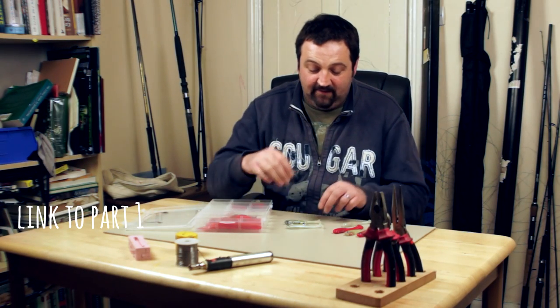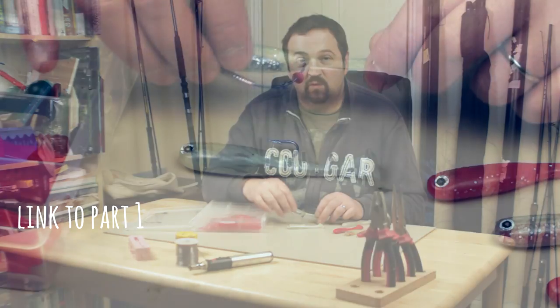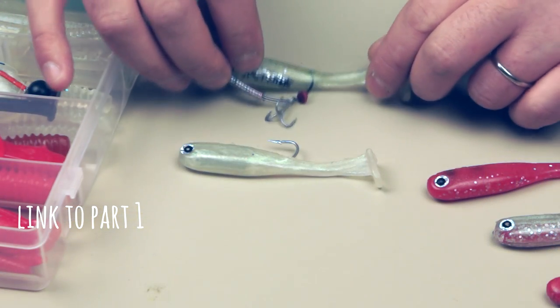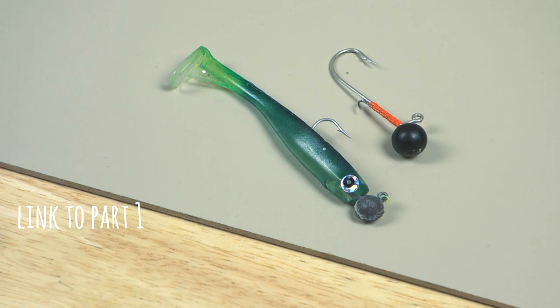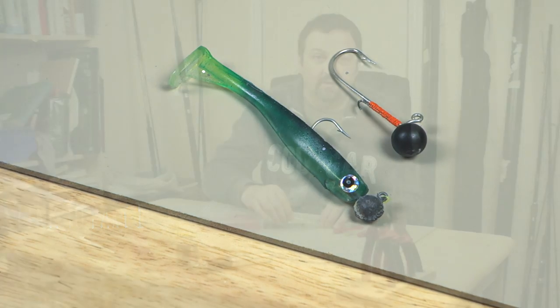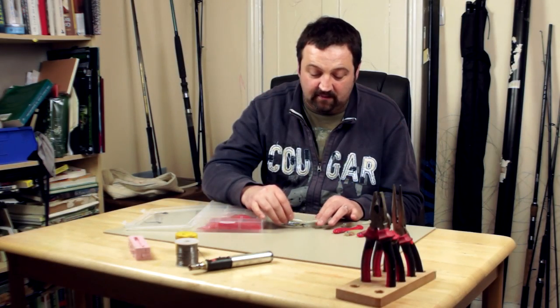Welcome to the second part of my project on making soft plastic paddle tails. For this video I've been experimenting with weighting and adding hooks to the lures that I made in the last video, and these are really alternatives to the standard jig heads. Although they're a little more complex, I seem to be doing quite well with them on small waters catching small fish. Enjoy the film.